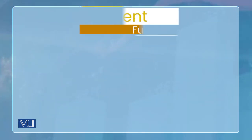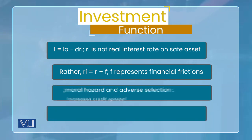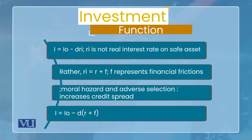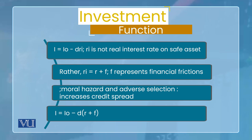ان دونوں کو جب اکٹھا کریں گے تو investment function بنے گا۔ Investment function کو ہم لکھتے ہیں: I (investment) = I₀ (autonomous investment expenditure) + D × Ri, جہاں D ایک coefficient ہے جو interest rate کے ساتھ investment کی sensitivity measure کرتا ہے، اور Ri وہ real interest rate ہے جو کسی particular firm کے debt یا borrowing پر applicable ہوتا ہے۔